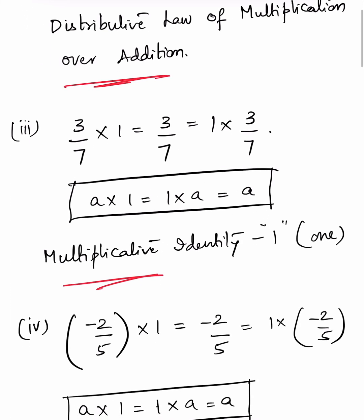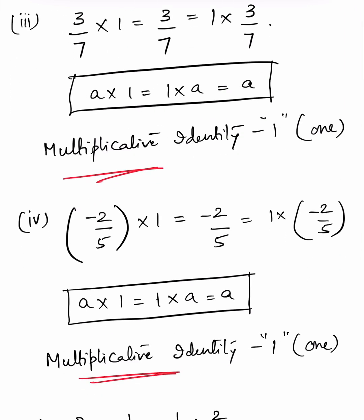3/7 × 1 = 3/7 = 1 × 3/7. This is in the form of a × 1 = 1 × a = a. This is the multiplicative identity property — if 1 is multiplied with any number, the answer is the same number. Similarly, -2/5 × 1 = -2/5 = 1 × (-2/5), which is also the multiplicative identity 1 property.